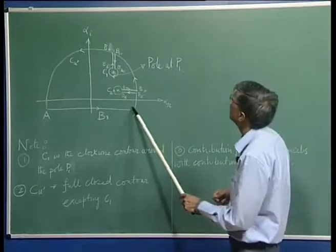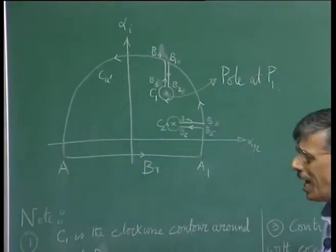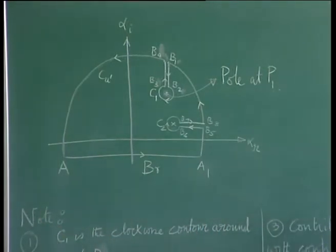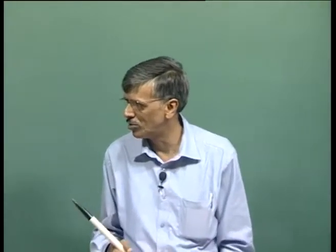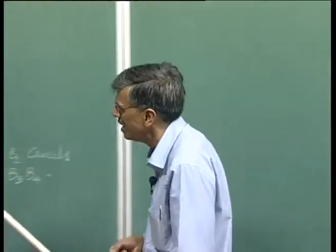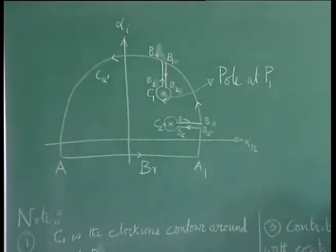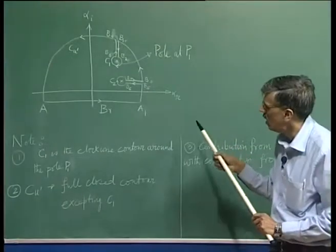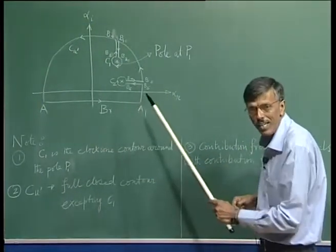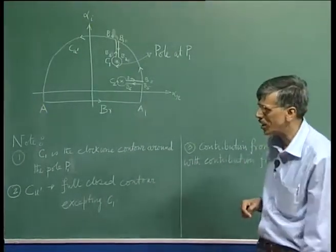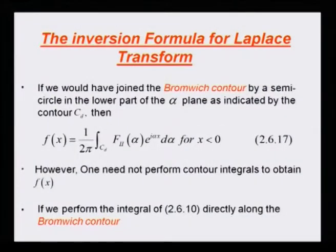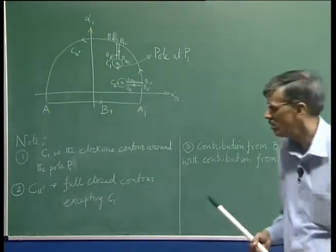This is an intriguing development. Any pole lying above corresponds to the downstream propagating wave. Instead of closing on the upper side, I could also close it on the lower side — that is what we call C_D. Whatever I have done here, I could have done there also, but those poles would correspond to contributions coming from upstream propagation.